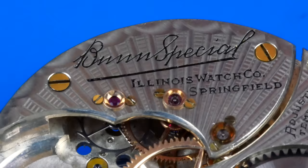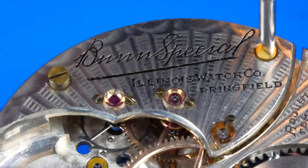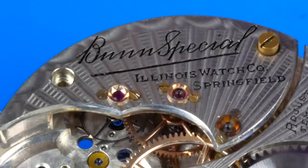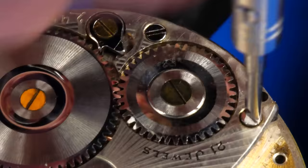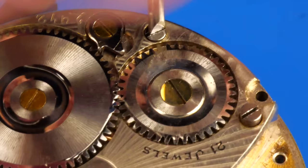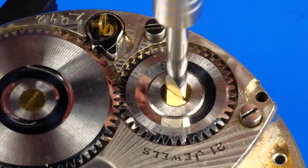The train wheel bridge is now uninstalled. I'm beginning to remove the barrel bridge and its components. Note on these movements, the crown wheel screw is reverse threaded.